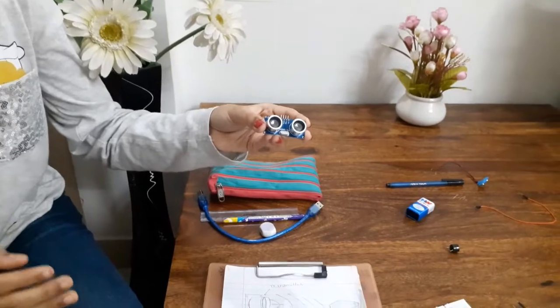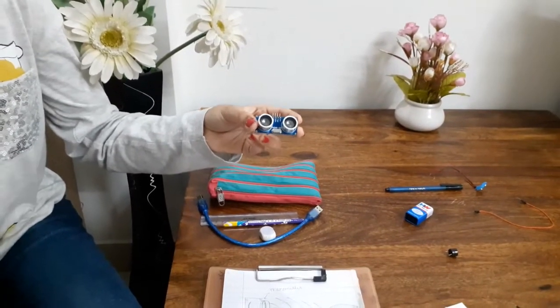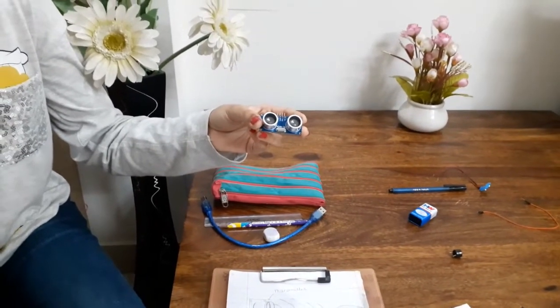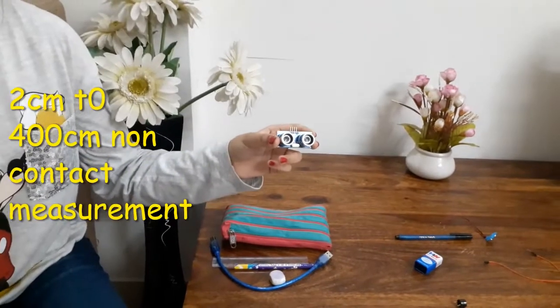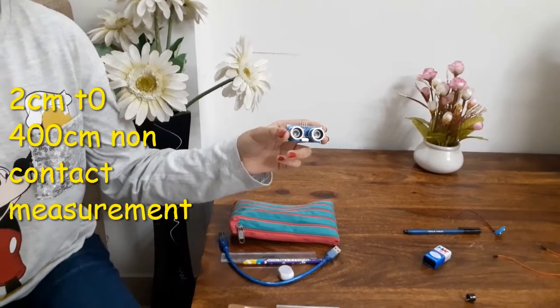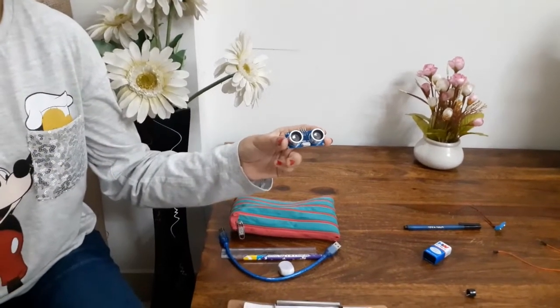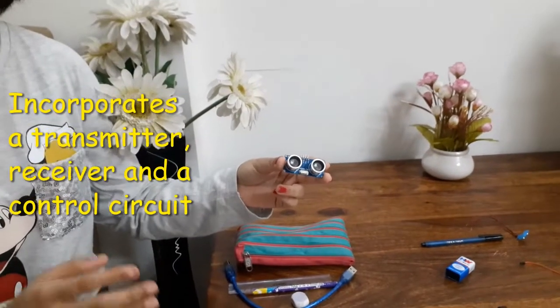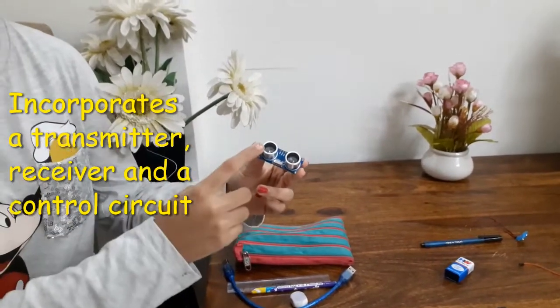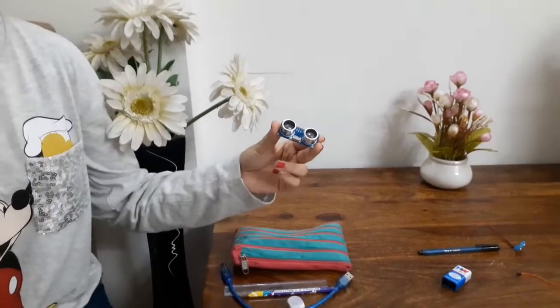It has got a range of minimum 2cm to maximum 400cm. Accuracy is 3mm and it is used for non-contact object detection. Each HC-SR04 module includes a transmitter, receiver and a control circuit.